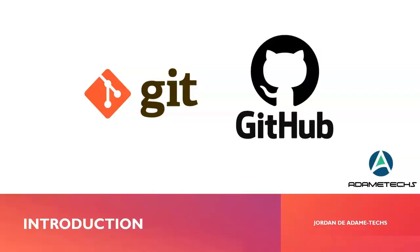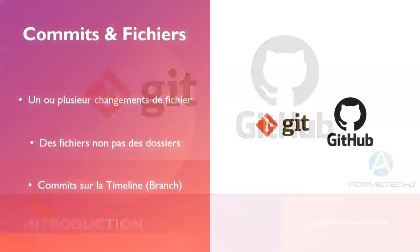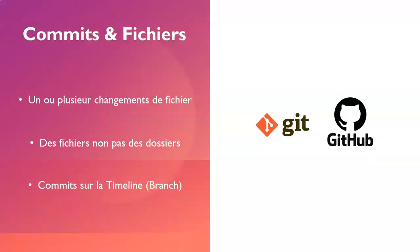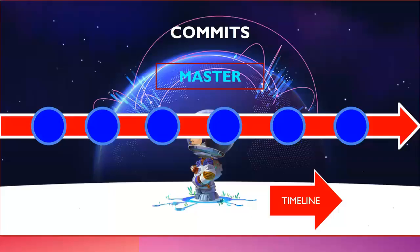It is important to note that Git versions files that are generated in commits. A commit can contain one or more file changes. Git versions files, not folders. You may sometimes have to use a technology that requires the existence of certain folders, so you can create empty dummy files to force Git to keep the folder. When you make changes, commits are saved on a timeline called a branch. A Git repository will normally have at least one branch, and by default that branch will be called master.